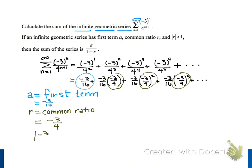And since the absolute value of negative 3 fourths is strictly less than one, that satisfies the hypothesis of our information above, and so we can use that formula.